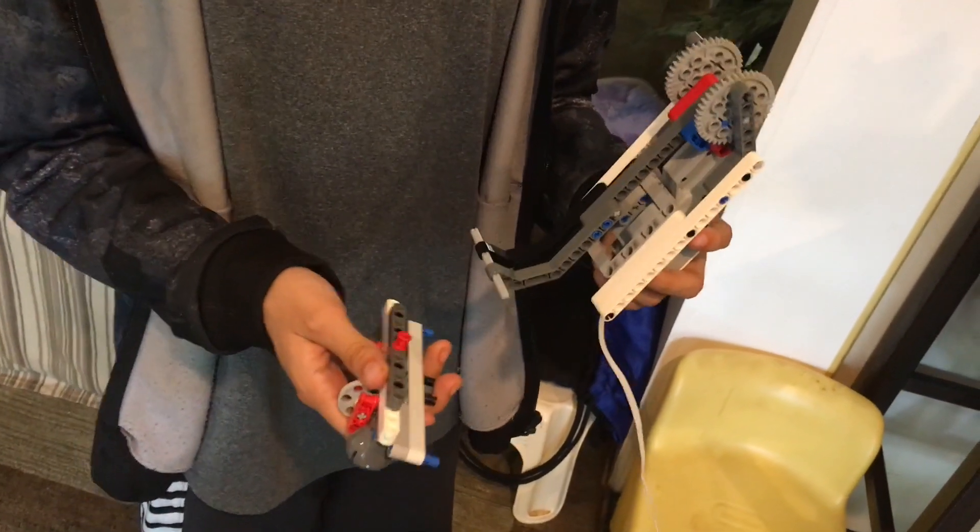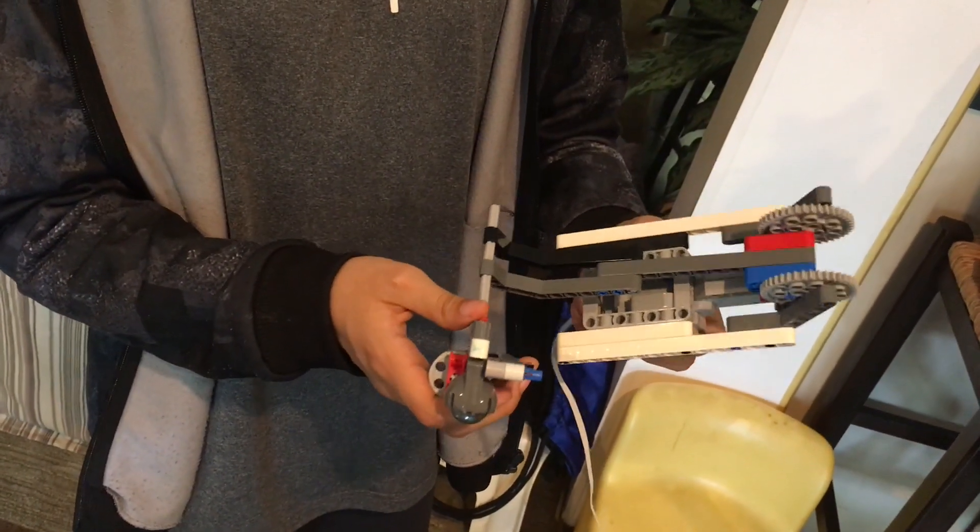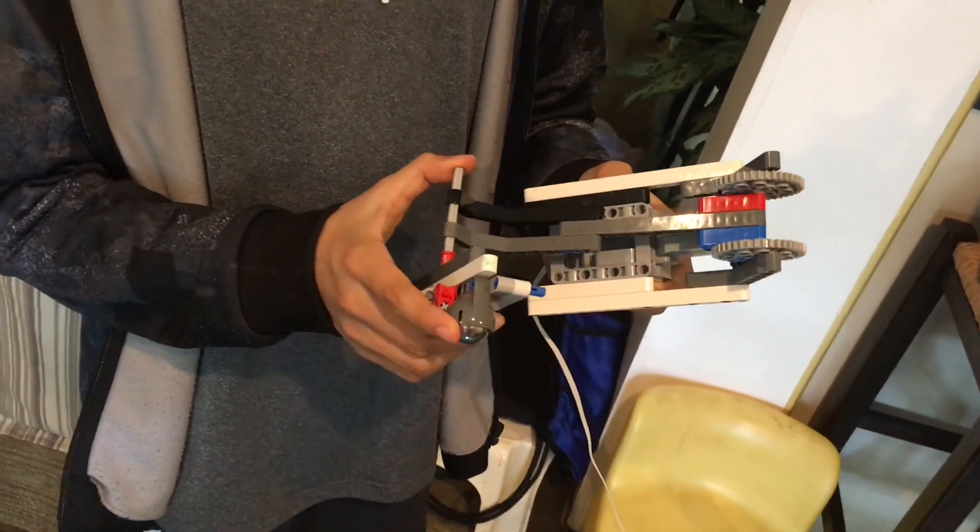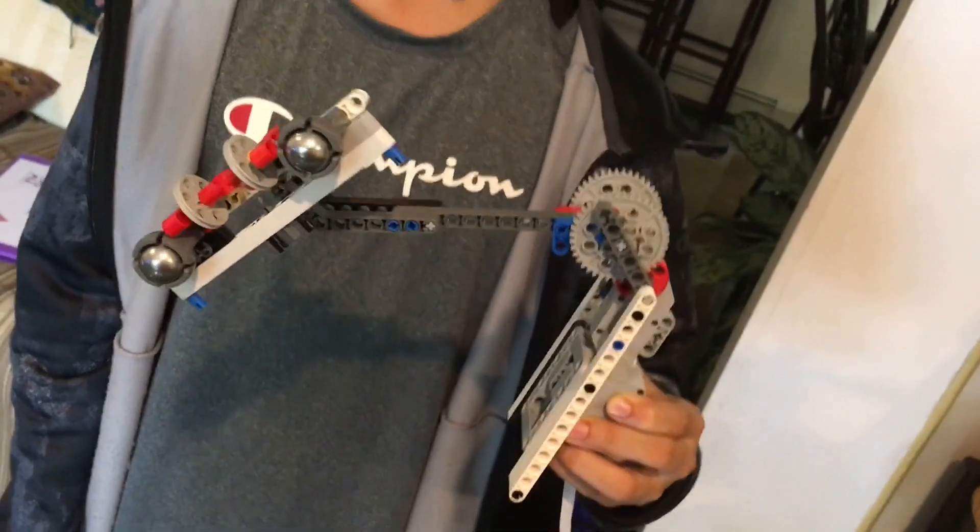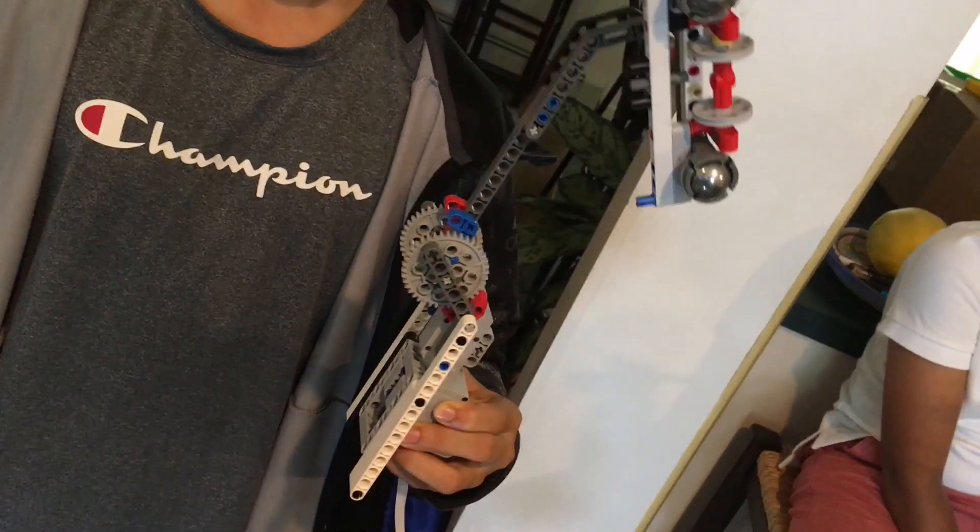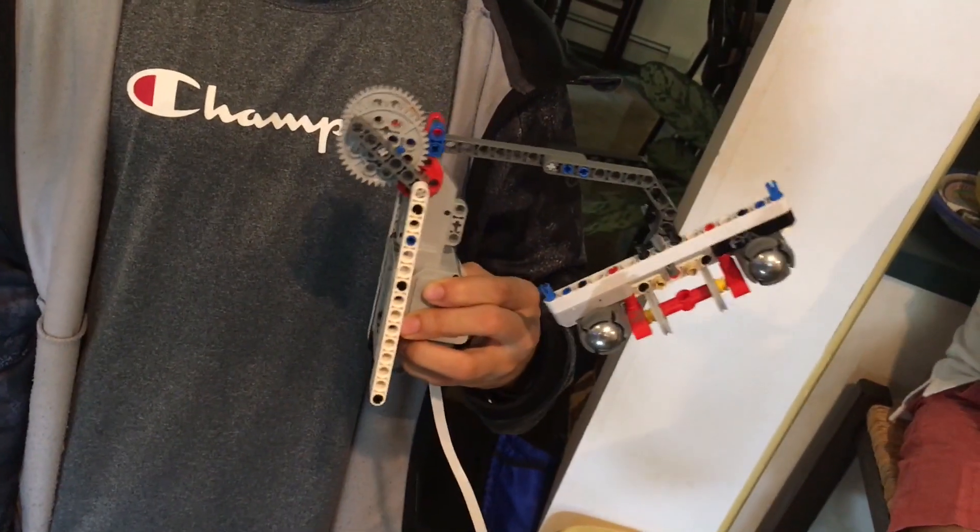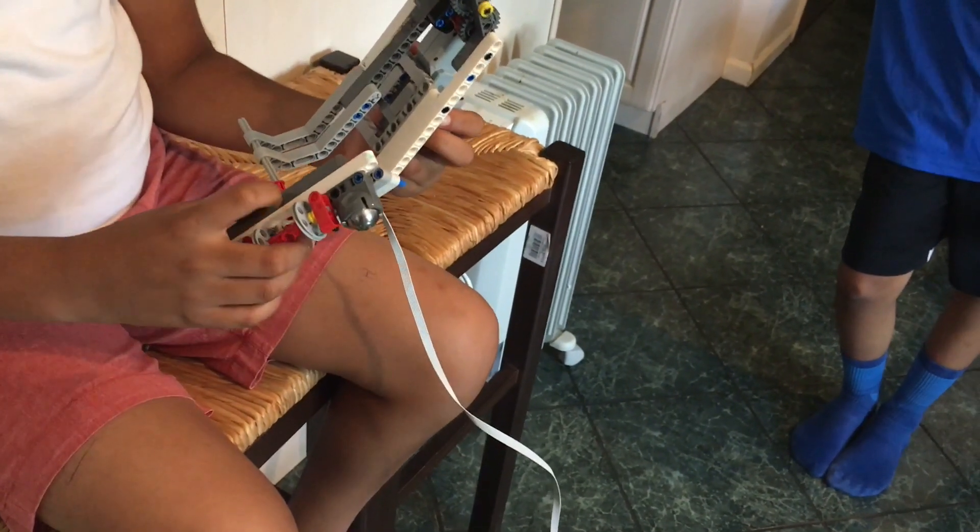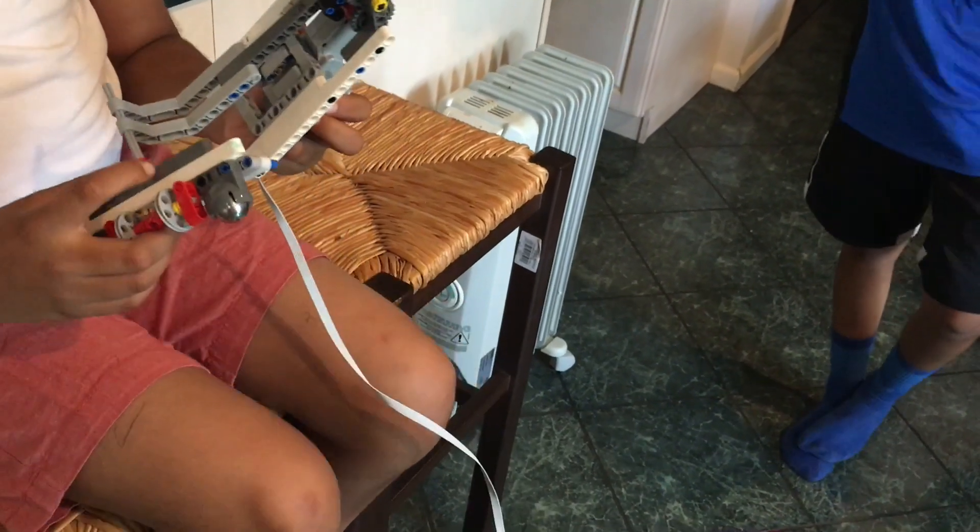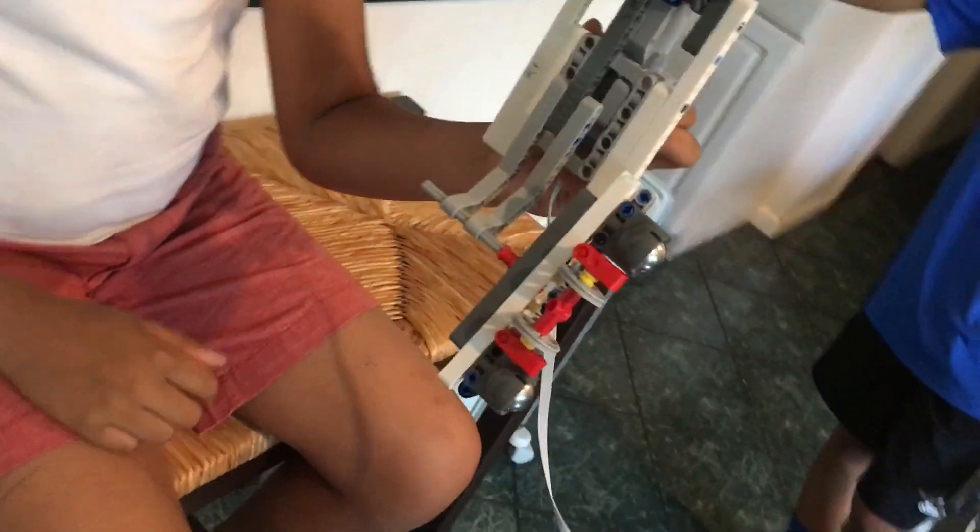Now I'm going to attach a heavier weight to the slowest arm. Let's see what happens. The arm was able to lift the heavier weight. Now I'm going to attach the weight to the arm that has the one to one ratio. Let's see what happens.